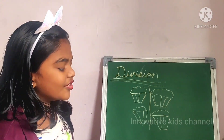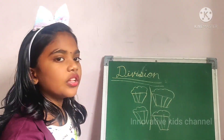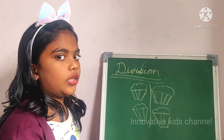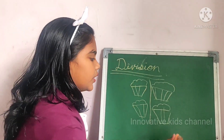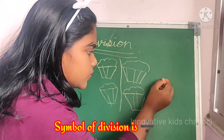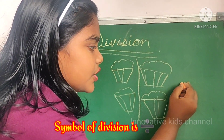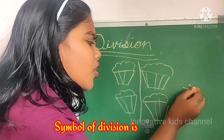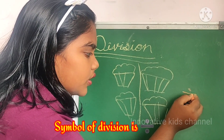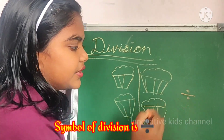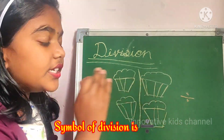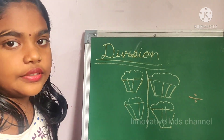Now let me share the symbol of division. We have to put one dot right here, and put a small line, and another dot on the down side. Now this is the division symbol.